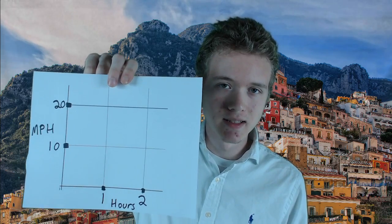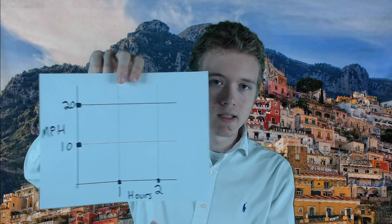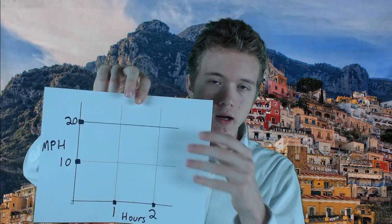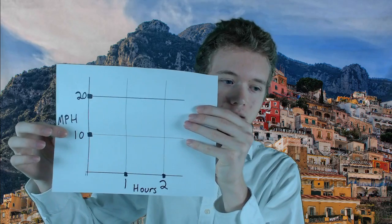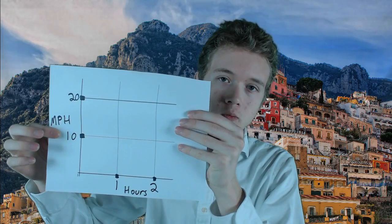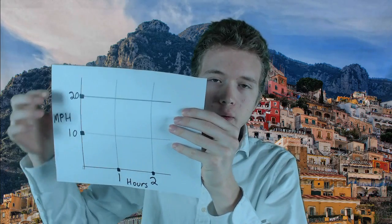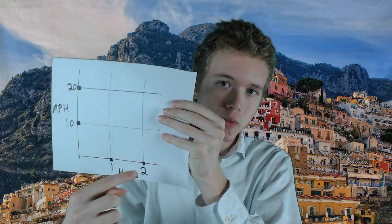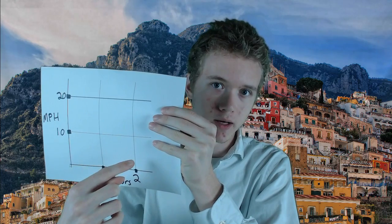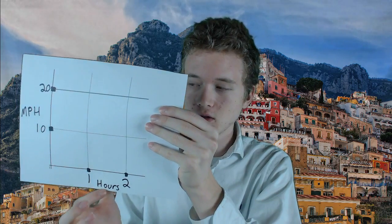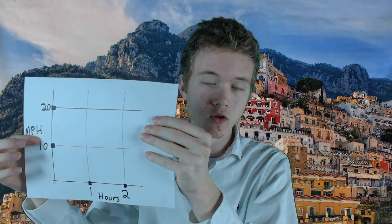Take this graph for instance. On one axis we have the number of hours, and on the other axis we have the total miles per hour. If we were to turn this into a rectangle, it would be the same thing as finding the area of the rectangle, which is length times width. So we could do the number of hours times the total of miles per hour, like this.